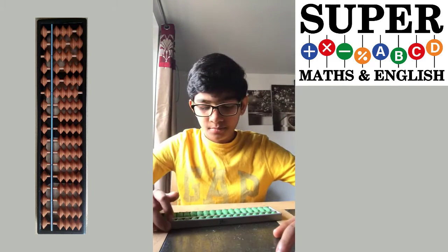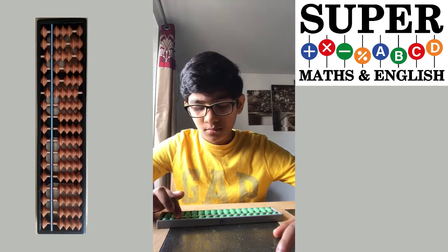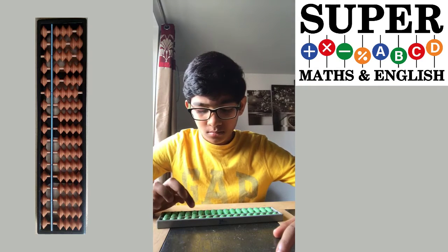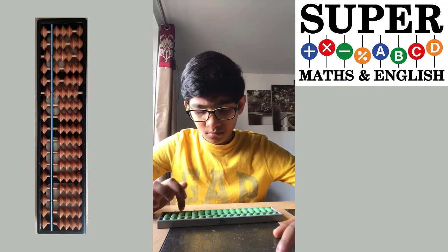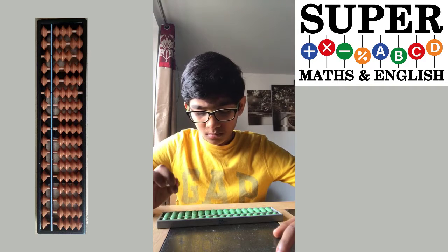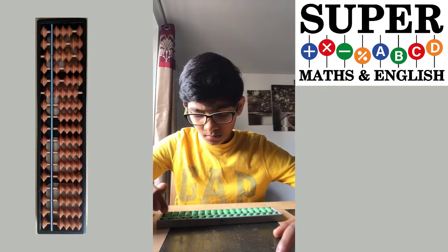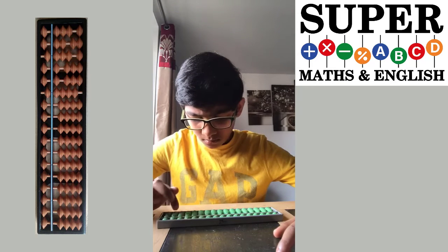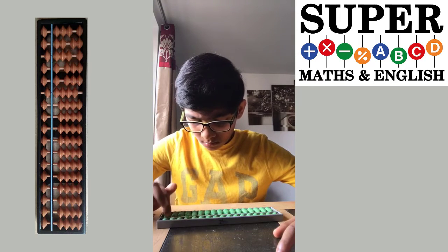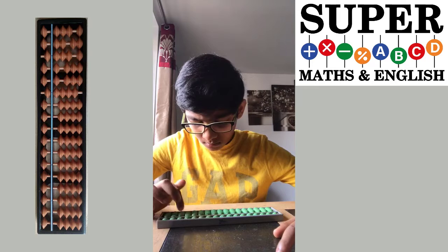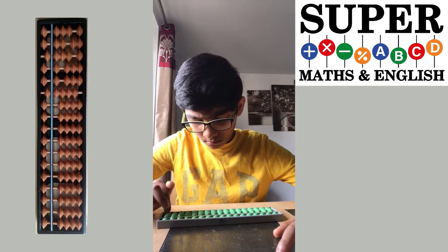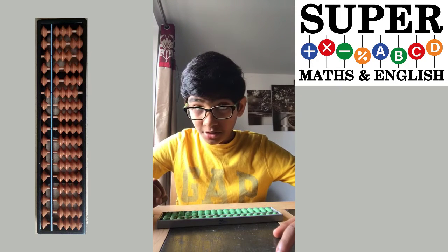Correct. 64,527 plus 1,452 minus 31,628 plus 2,659 minus 7,412. Answer: 29,598. Correct.